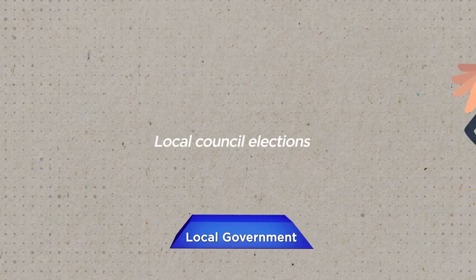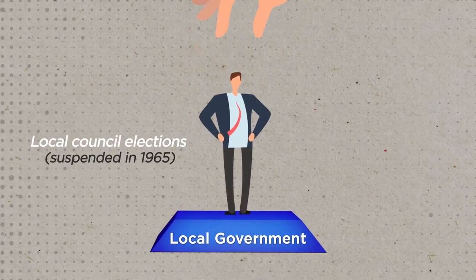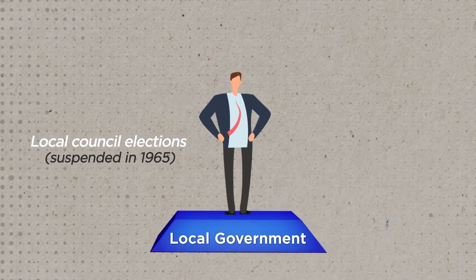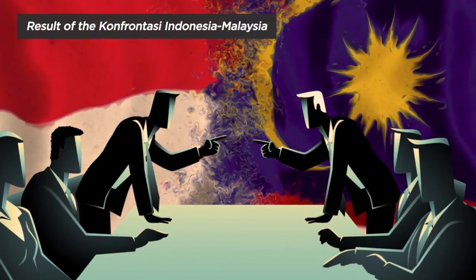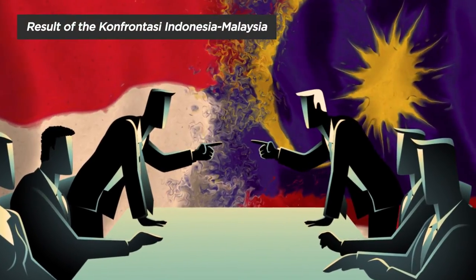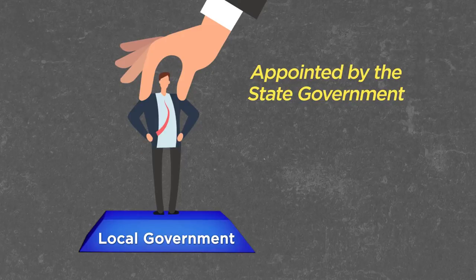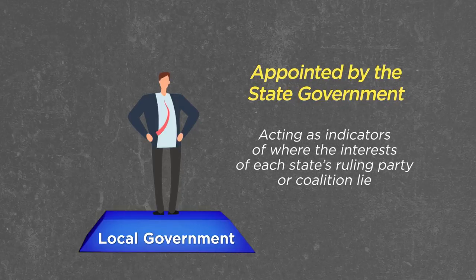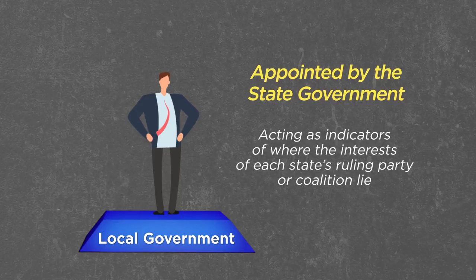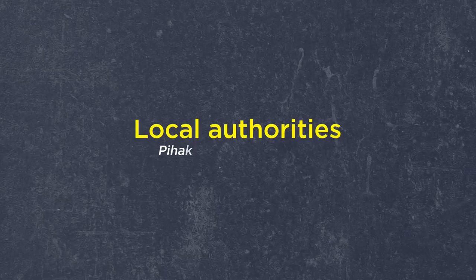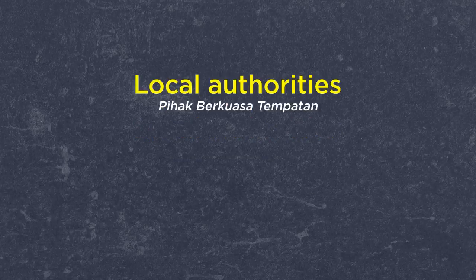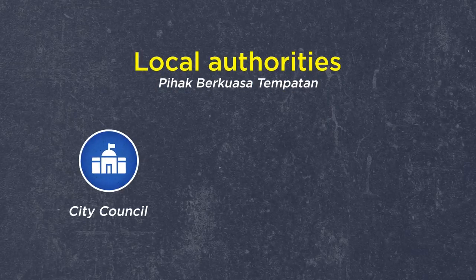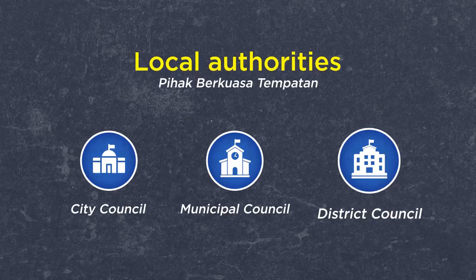While both the federal and state governments are elected, the local government is not elected by the rakyat. Local council elections were suspended in 1965 due to the Konfrontasi incident and have not been reinstated since. Hence, local government officials are often appointed by state governments, acting as indicators of where the interest of each state's ruling party or coalition lie. The three types of local authorities or pihak berkuasa tempatan are city council, municipal council, and district council.